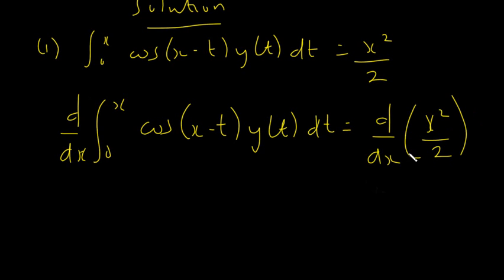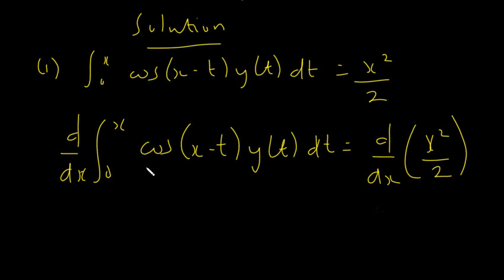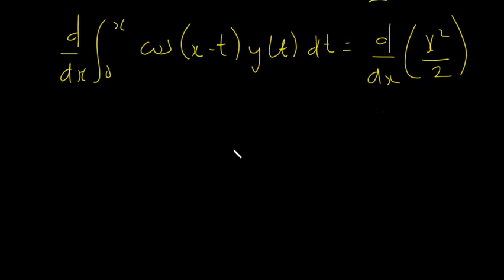Using the Leibniz formula, we know this whole integrand is our f(x, t). First we evaluate the functional value at the upper limit — substituting t = x — and multiply by the derivative of the upper limit. Then we subtract the functional value at the lower limit, substituting t = 0, multiplied by the derivative of the lower limit with respect to x.